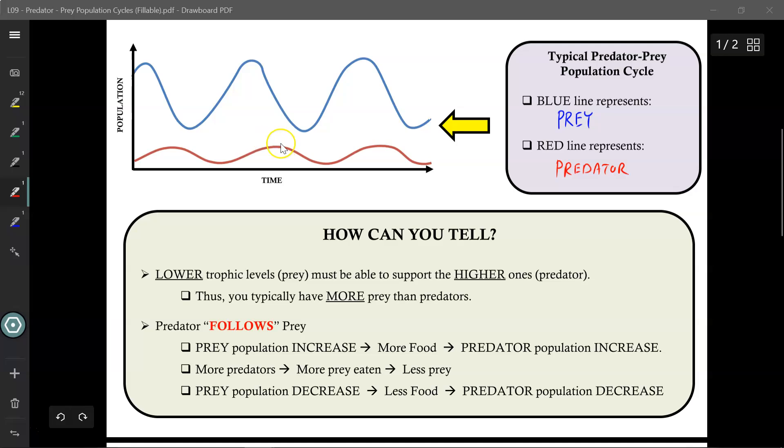When there's too many predators, there's overhunting and the prey population decreases. When there's not a lot of food, the predator population will also decrease. The prey is always followed by the predator—typically anyway. There will always be exceptions to the rule where some random event may cause the predator-prey relationship to be disrupted.